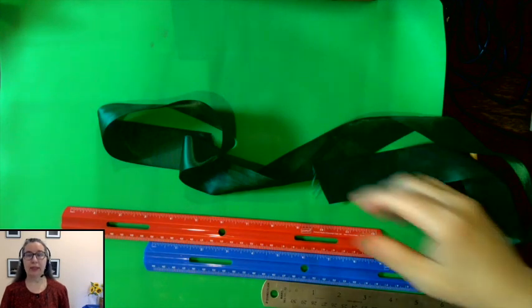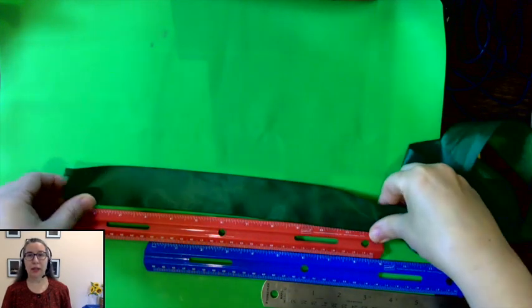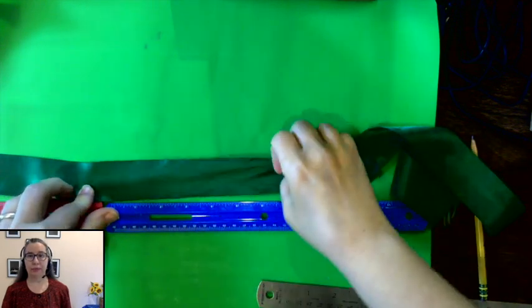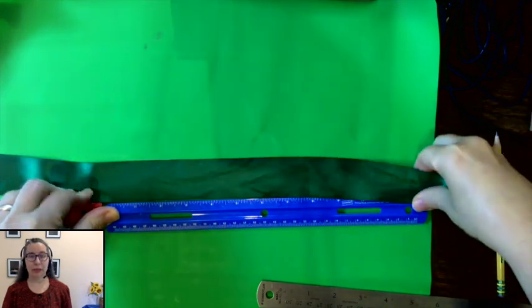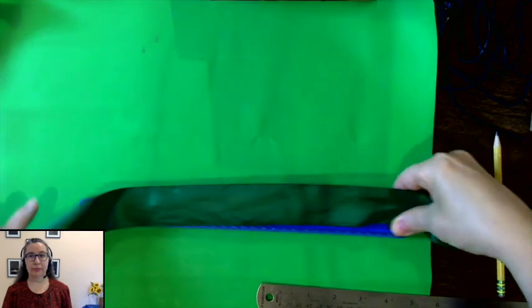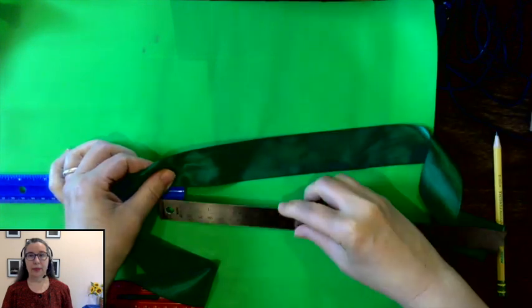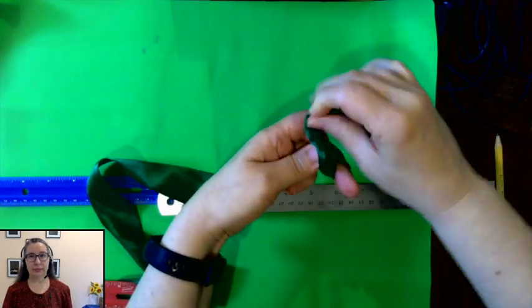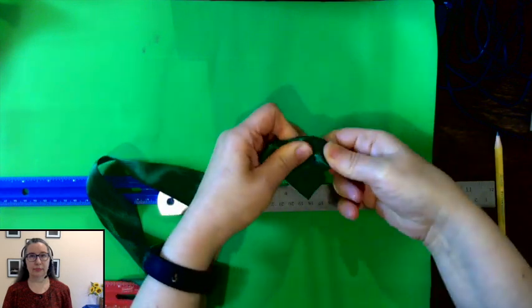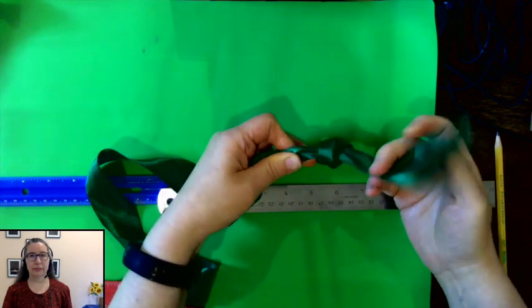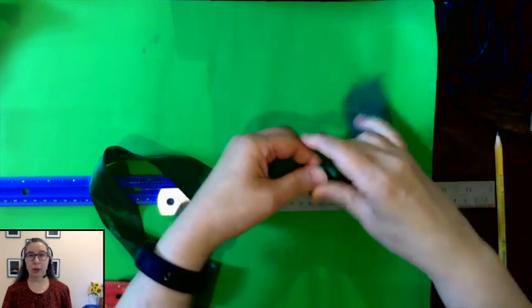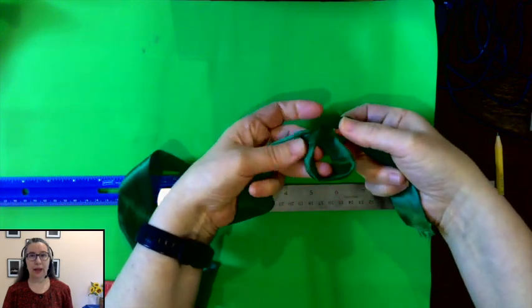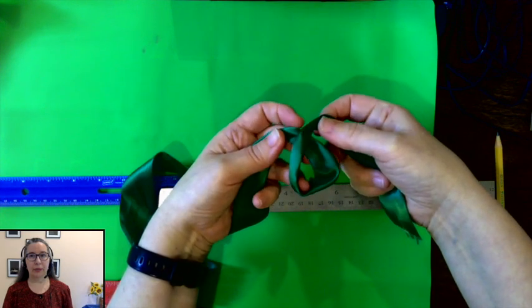Now we need to measure out something for the distance between the Earth and the Moon. You can use a string, a ribbon, a long strip of paper, a thread, a yarn, and it needs to be 30 inches long. If you have three rulers, you can lay them out. My ribbon is a little bit longer than 30 inches, and I don't feel like cutting it. So I'm just going to put a knot in it. To make a simple overhand knot, you make a loop, and then the part that's on top goes behind, and you pull it up inside the loop that you made.